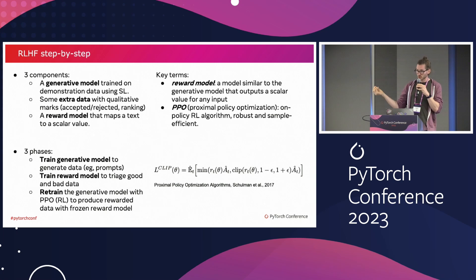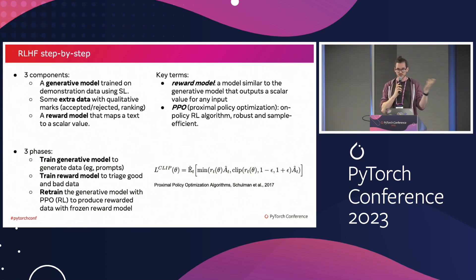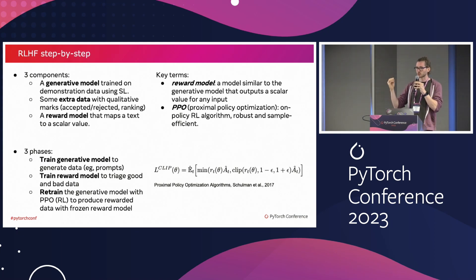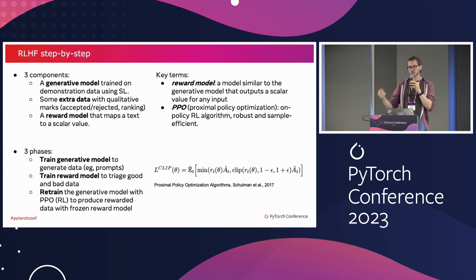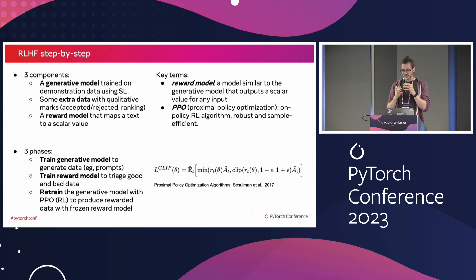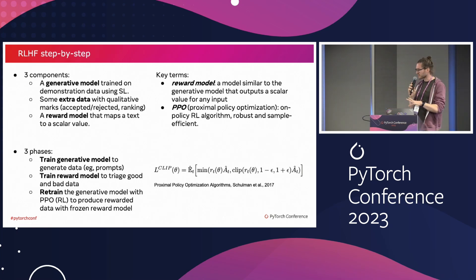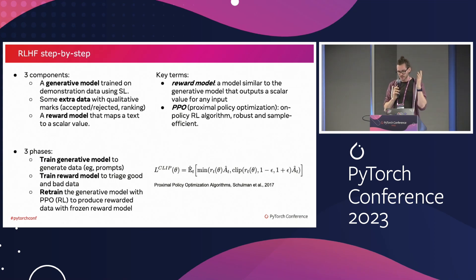The two key terms here are reward model and PPO. The reward model is usually a version of your GPT model in which you have replaced the last layer with something that outputs a scalar value, and then you fine-tune this model on the labeled data. The reinforcement learning algorithm we usually use is called PPO — you don't necessarily need to remember that, but if you're looking at RLHF, most of the time people are going to use PPO.